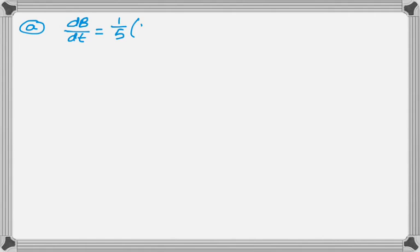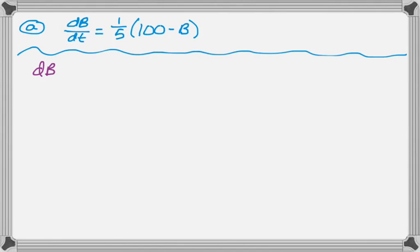So the first thing we have to do is figure out when this bird is gaining more weight or when the rate of change is greater. So we're told two different weight values, 40 and 70, and those are B values.